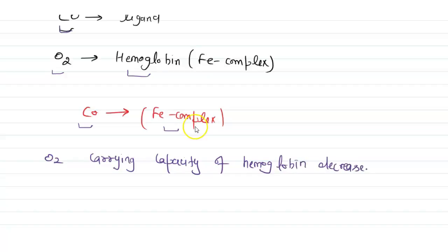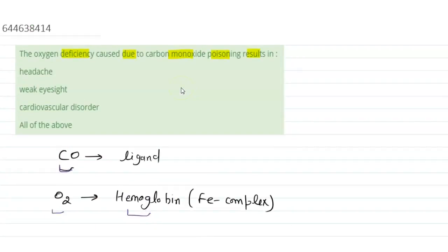As a result, oxygen does not reach different parts of our body. This causes headache, weak eyesight, and cardiovascular disorder. All three of these symptoms are observed when we have a deficiency of oxygen in our body.